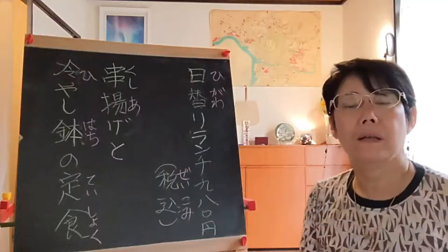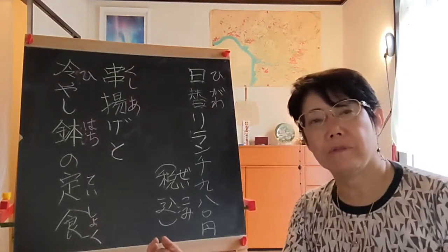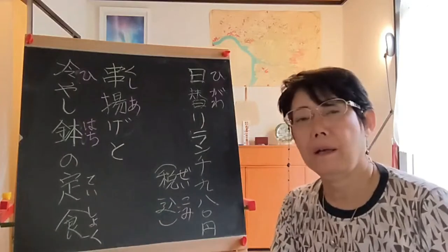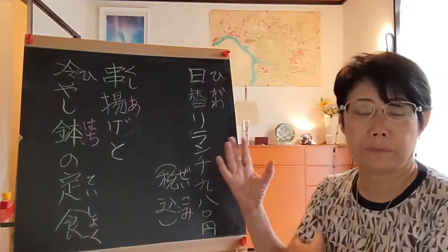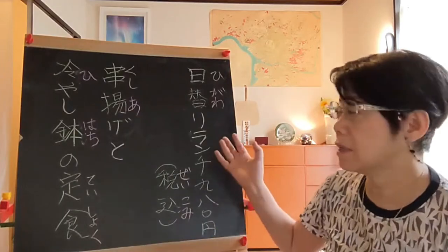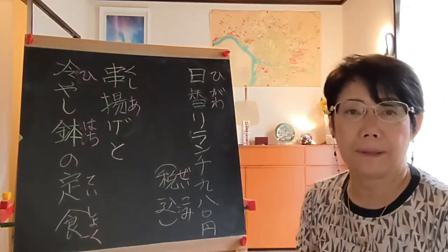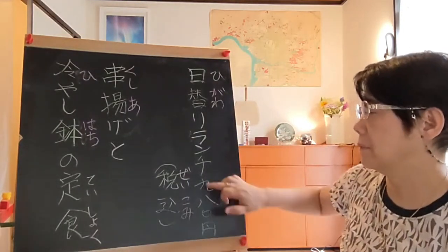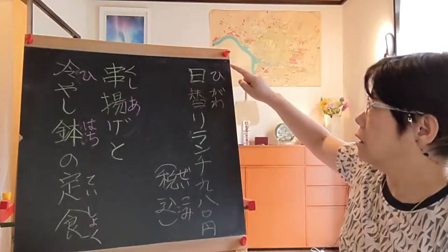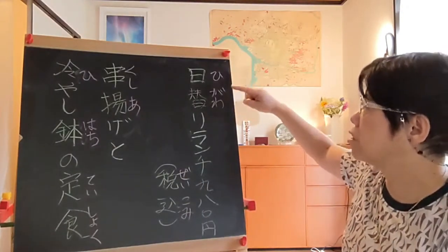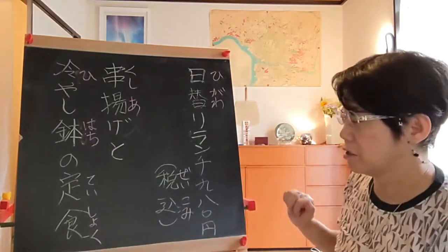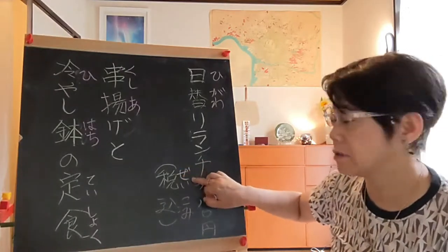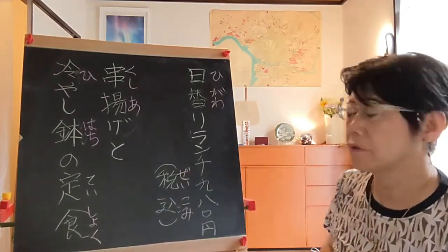Before entering this washoku no mise, let's check out the blackboard in front of the restaurant — it tells us today's lunch. Higawari lunch — higawari means day-change lunch, meaning today's lunch. Zei komi: zei is tax, komi is include, so tax included.